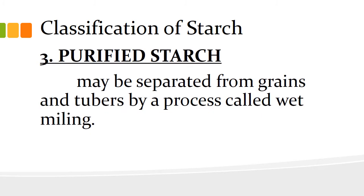Next, number three, purified starch. It may be separated from grains and tubers by a process called wet milling. This procedure employs various techniques of grinding and screening to separate starch from fiber, oil, and protein.